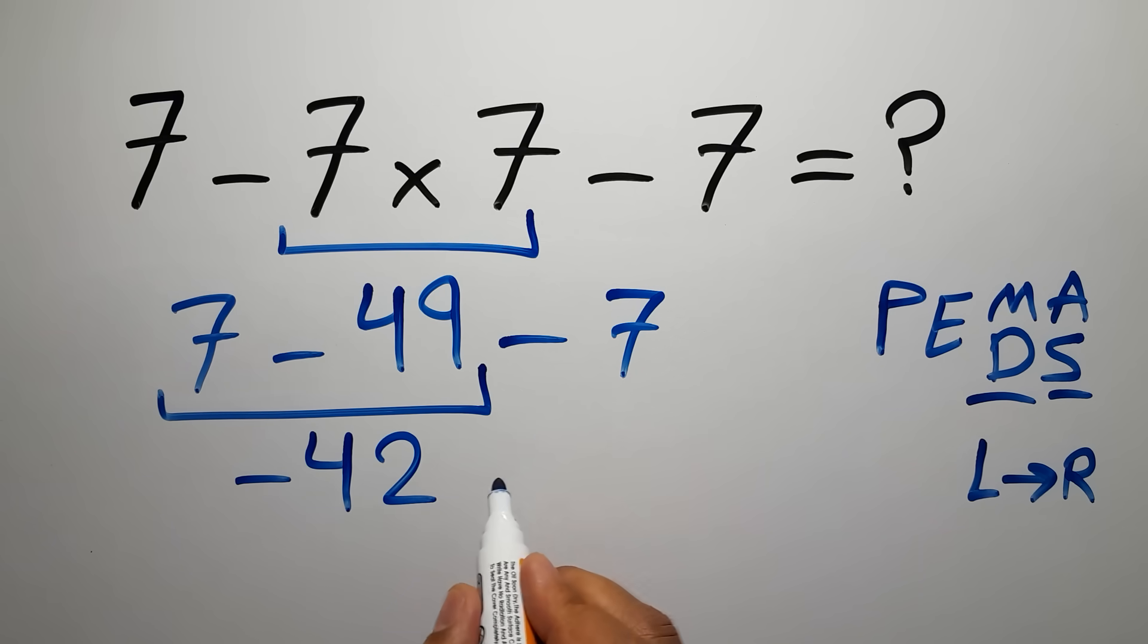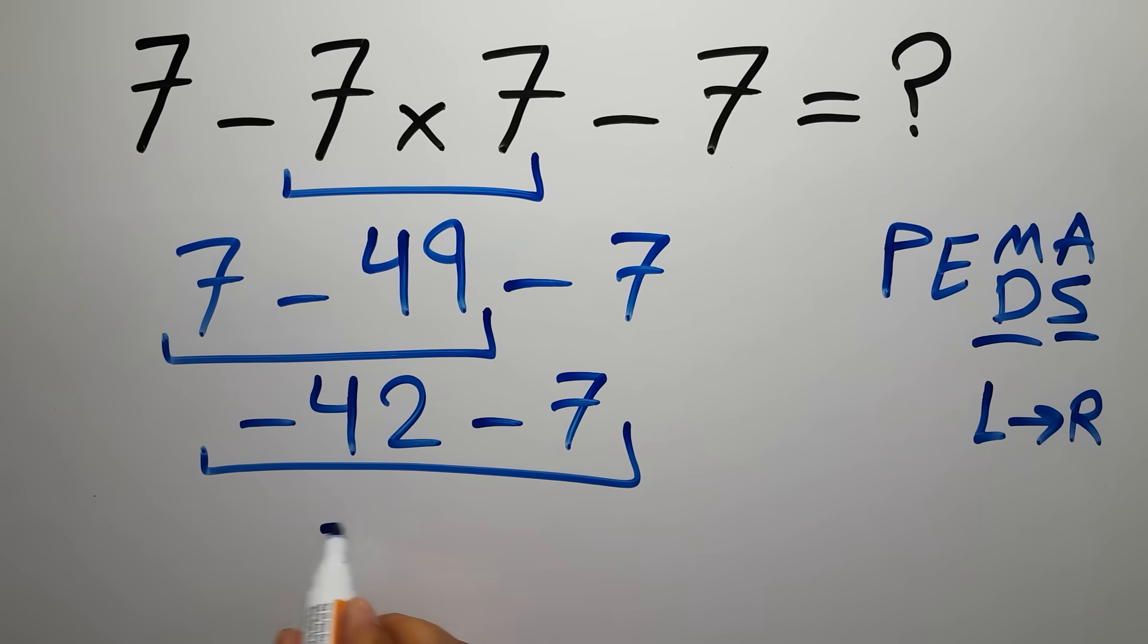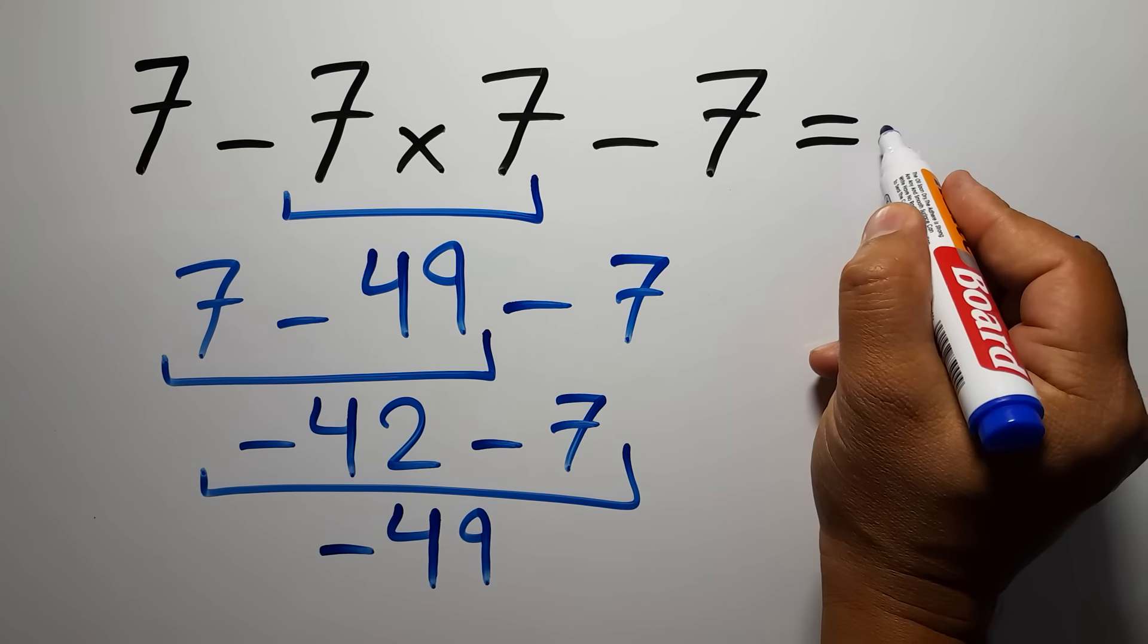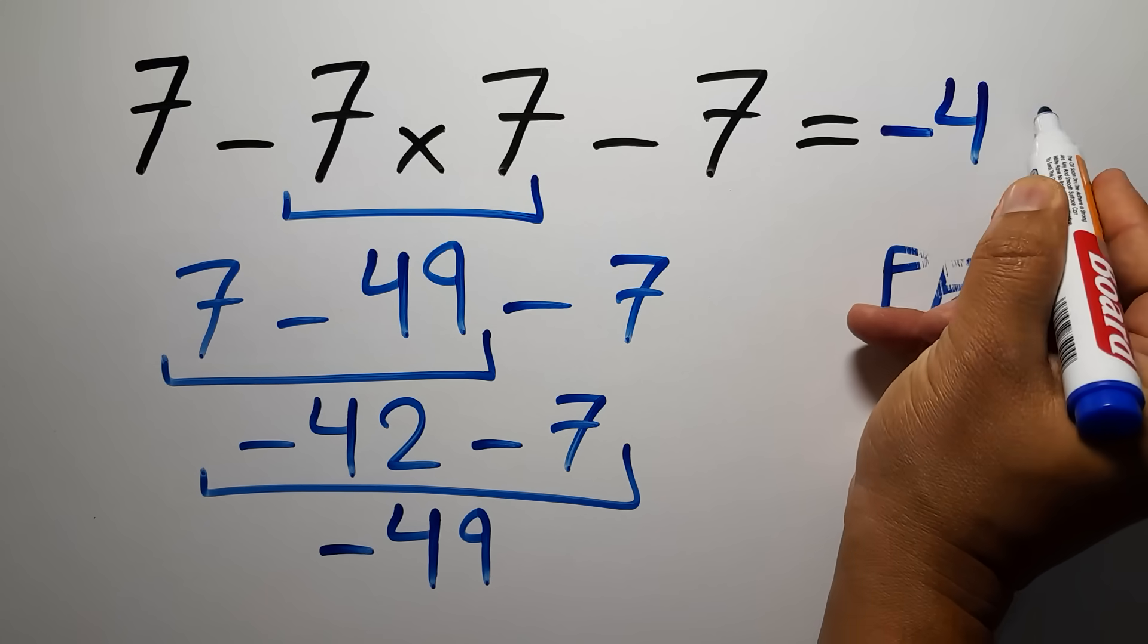And negative 42 minus 7 equals negative 49. This is our final answer to this problem. The correct answer is negative 49.